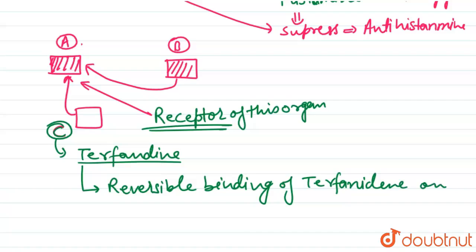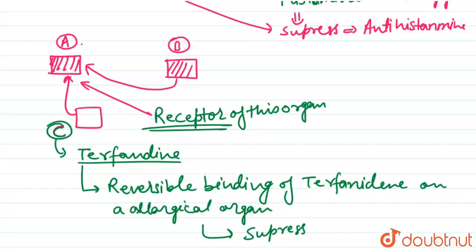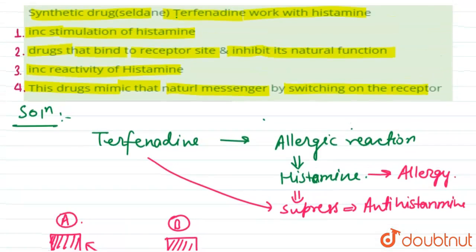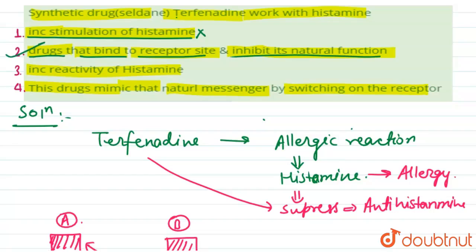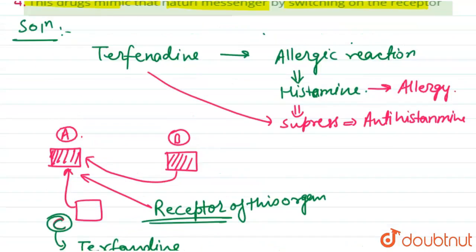Now let us evaluate the options. The first option — it increases the stimulation of histamine — is absolutely incorrect. The second option — the drug binds to the receptor site and inhibits its natural function — is absolutely correct. Terfenadine binds at the receptor and decreases the natural function of that allergic part.